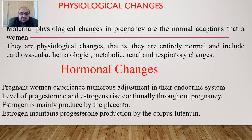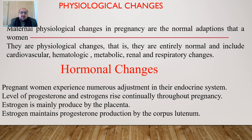Metabolic changes also occur during pregnancy. For example, in the first trimester, the pregnant woman may experience vomiting and nausea. These types of conditions are related to metabolic changes and we will discuss them step by step.